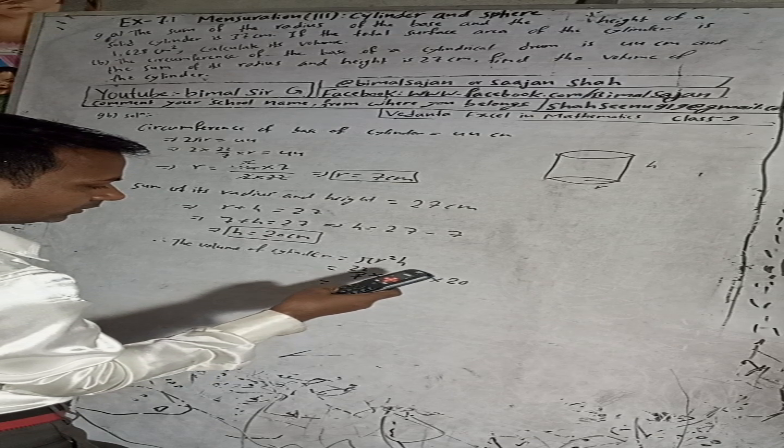πr² means π is 22/7, r² means r is 7, so 7 squared is 7 times 7. And height is 20. So this is 22 times 7 times 20. 7 cancels, 20 to 7, so 22 times 7 times 20.